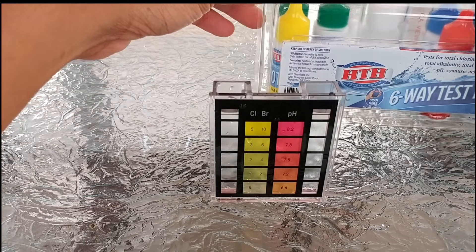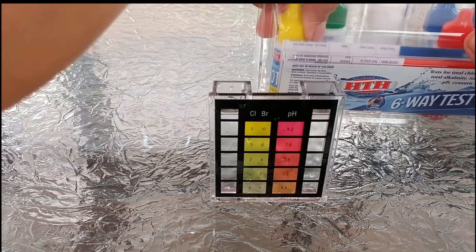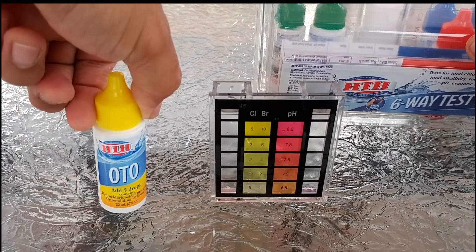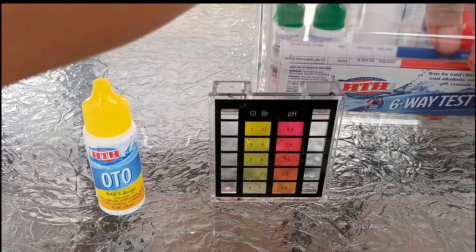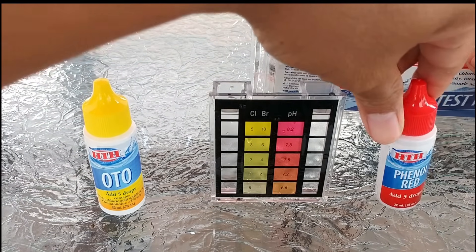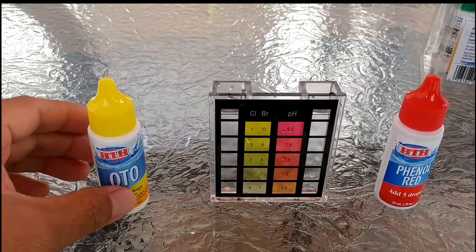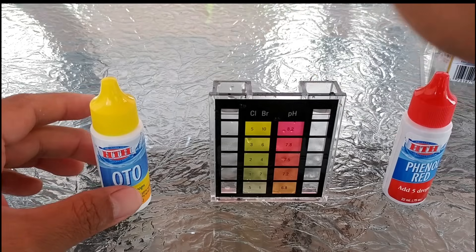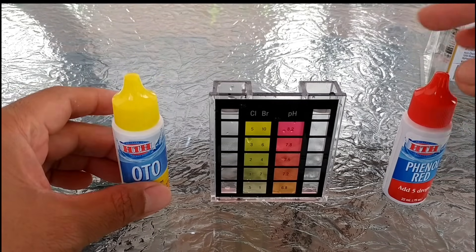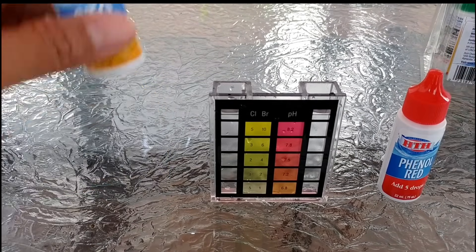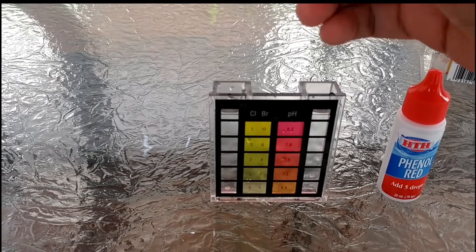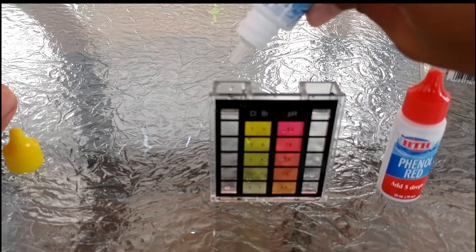So to test for the chlorine, we just need the yellow reagent, and for the pH, we need the phenol red, which is the red cap. What you want to do is put five drops here of the yellow and five drops here of the red.